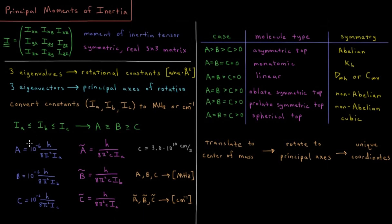When we do that, we go from these eigenvalues to what are called rotational constants. You may be familiar with these from the rigid rotor model. The rotational constant B in units of megahertz is 10⁻⁶ times h over 8π² times Ib, where h is Planck's constant and Ib is the middle eigenvalue. B-bar is the same value divided by the speed of light in centimeters per second (3×10¹⁰). We get a set of A, B, C in megahertz or A-bar, B-bar, C-bar in wavenumbers.